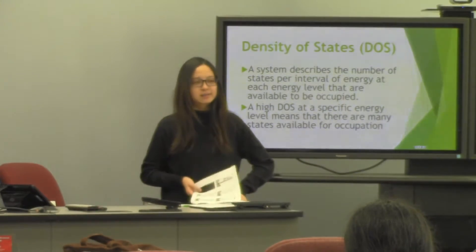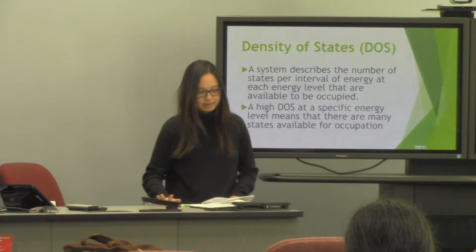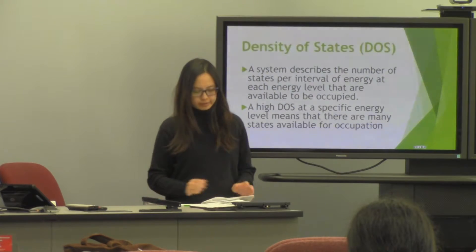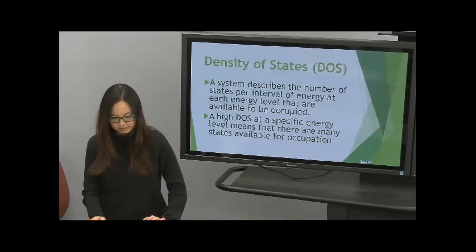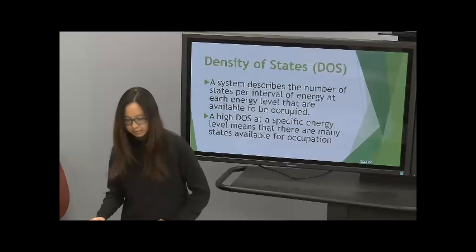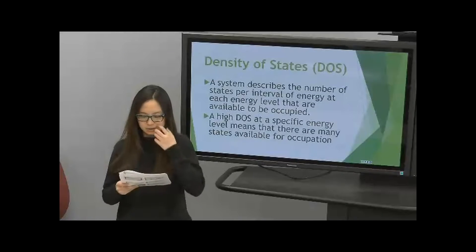So in general, density of states is the system that describes the number of states per interval energy at each energy level that are available to be occupied by electrons. A high density of states at a specific energy level means that there are more states available for occupation of electrons.